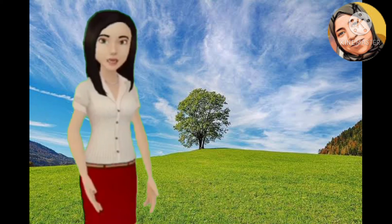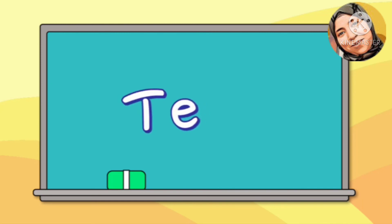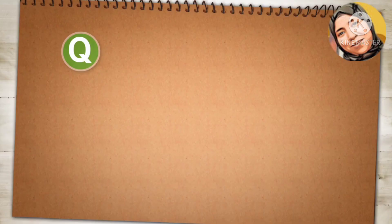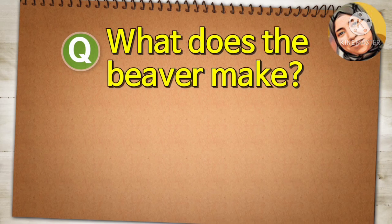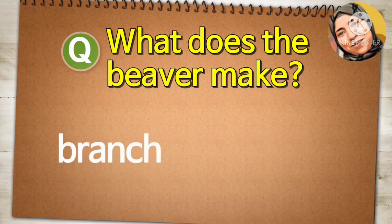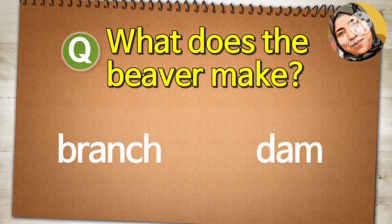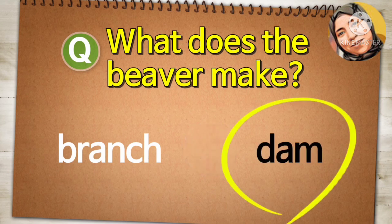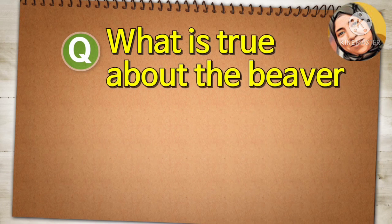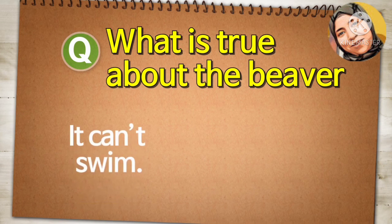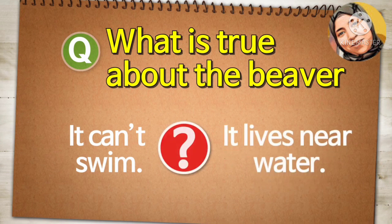Excellent! Time for another test. Let's begin! What does the beaver make? Branch. Dam. What is true about the beaver? It can't swim. It lives near water.